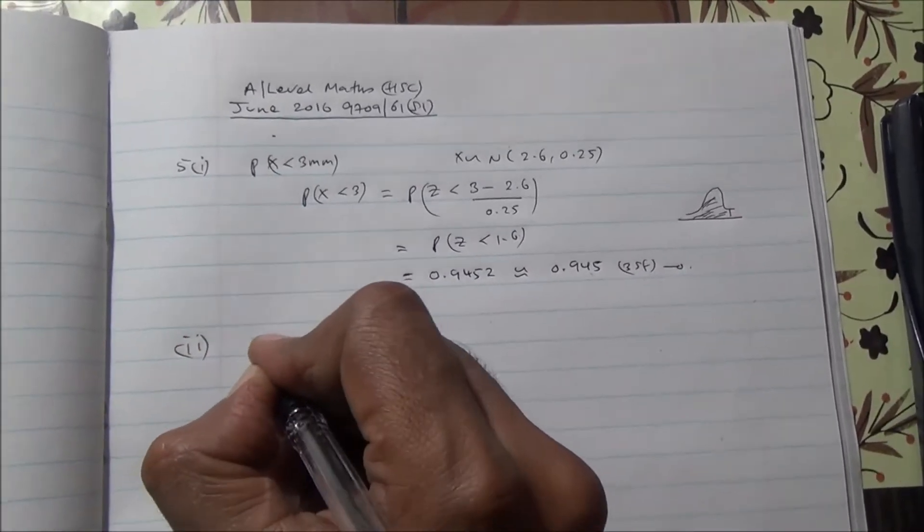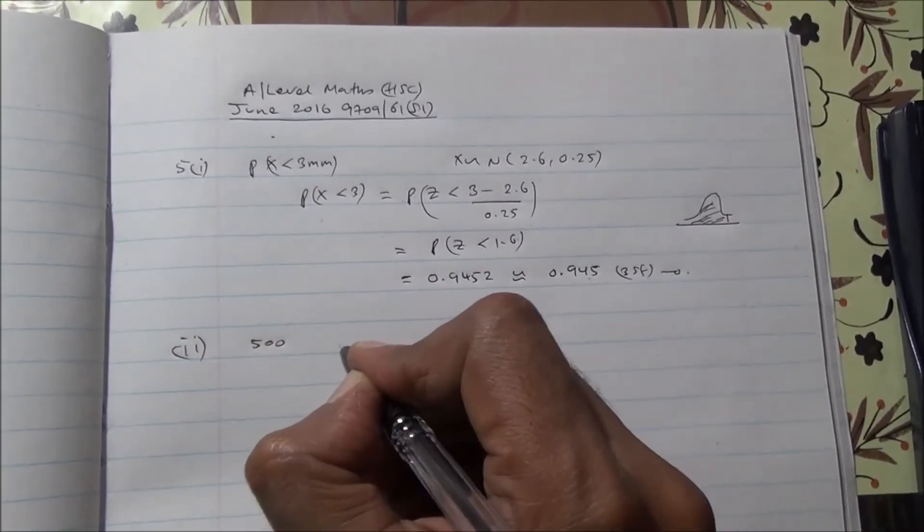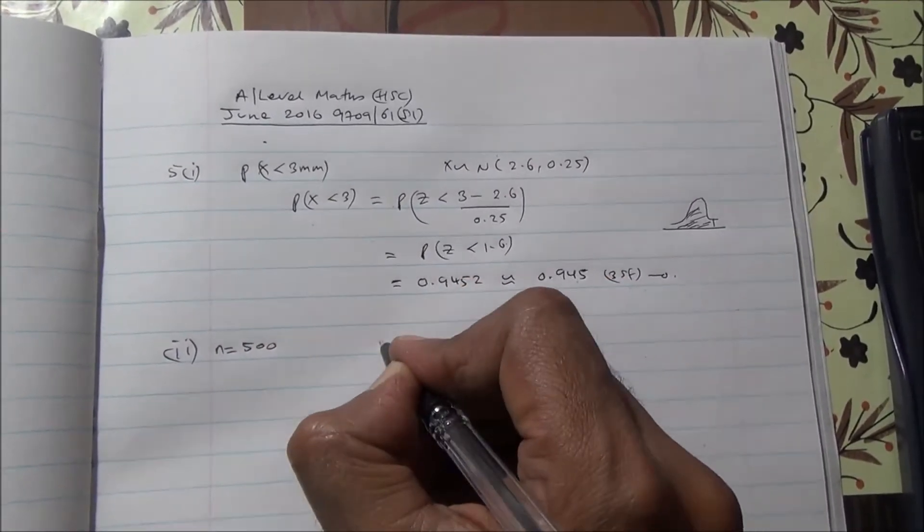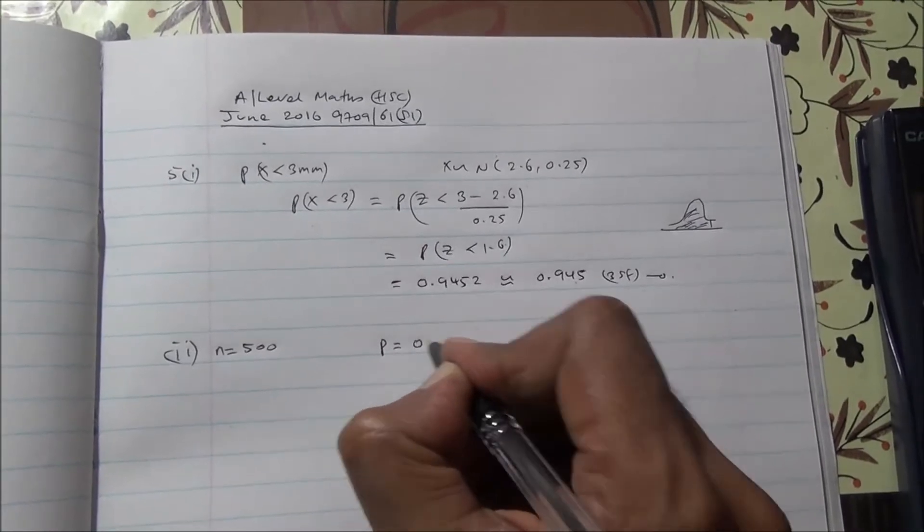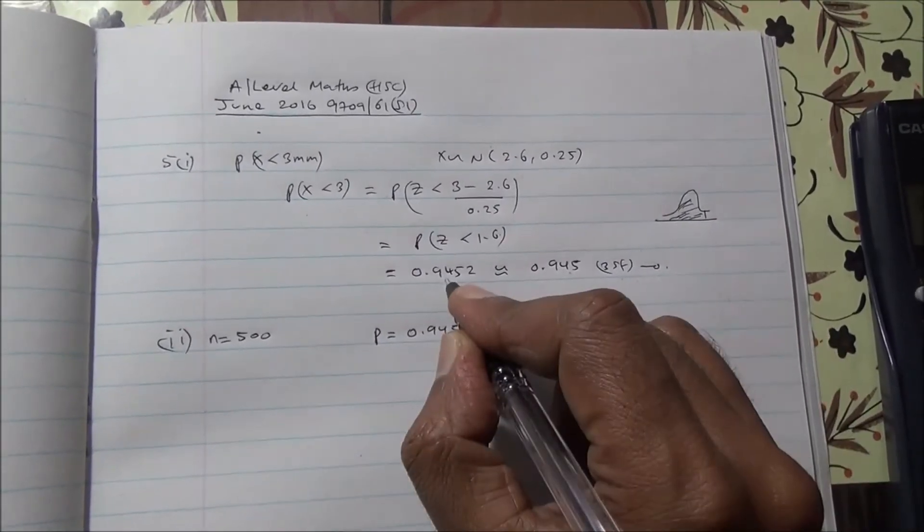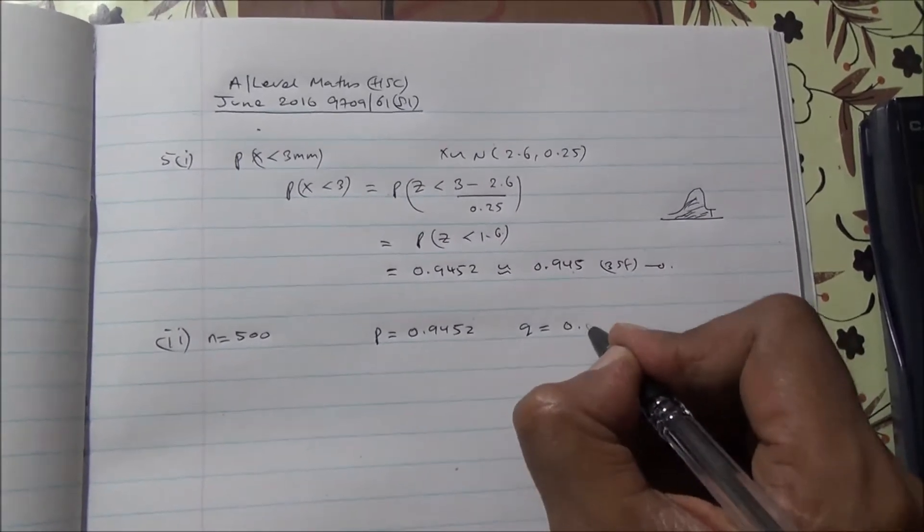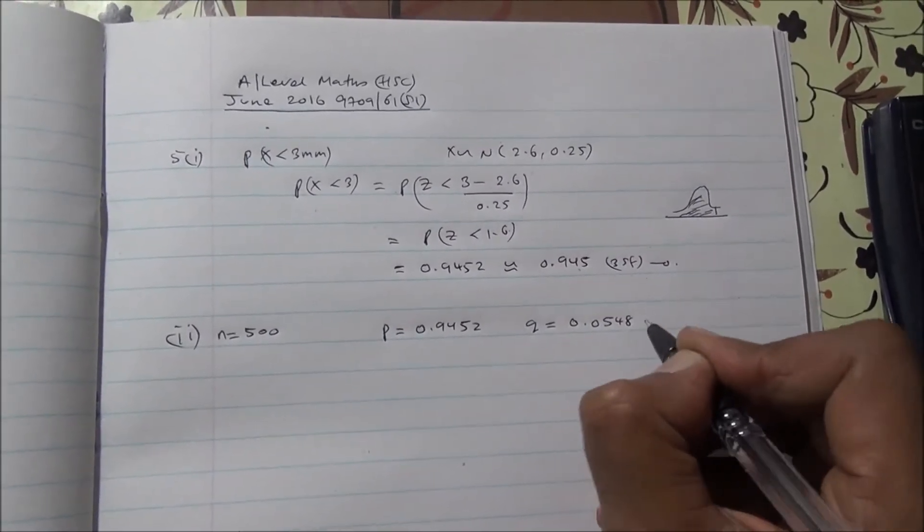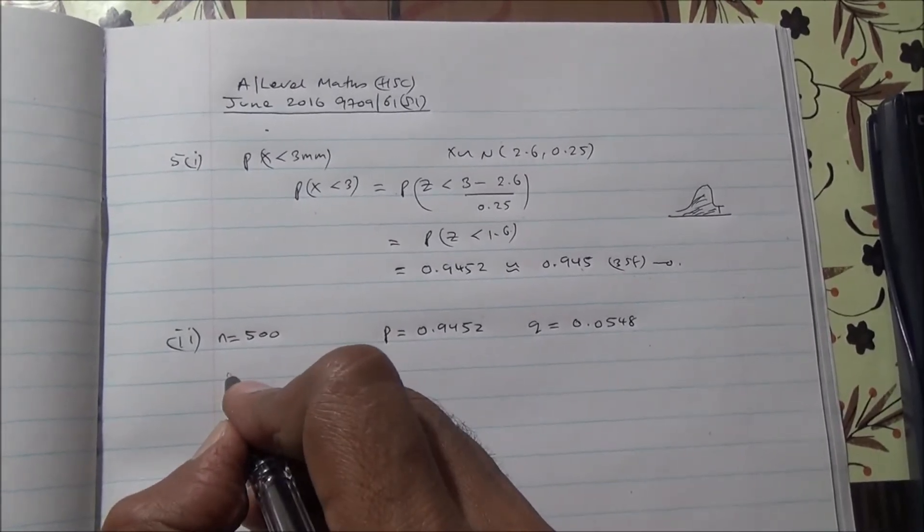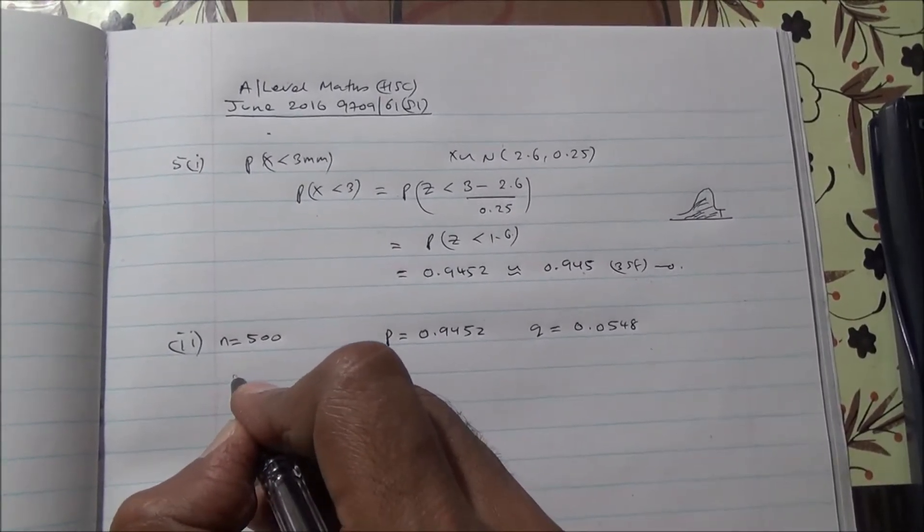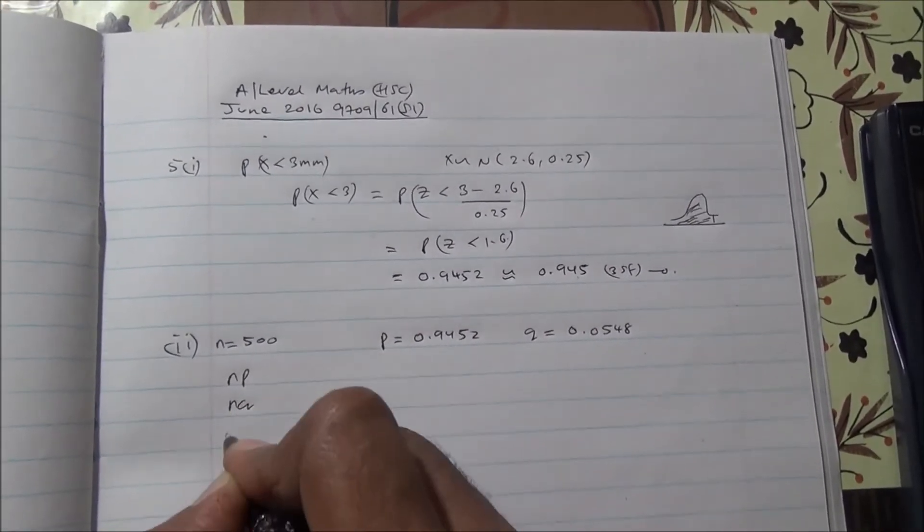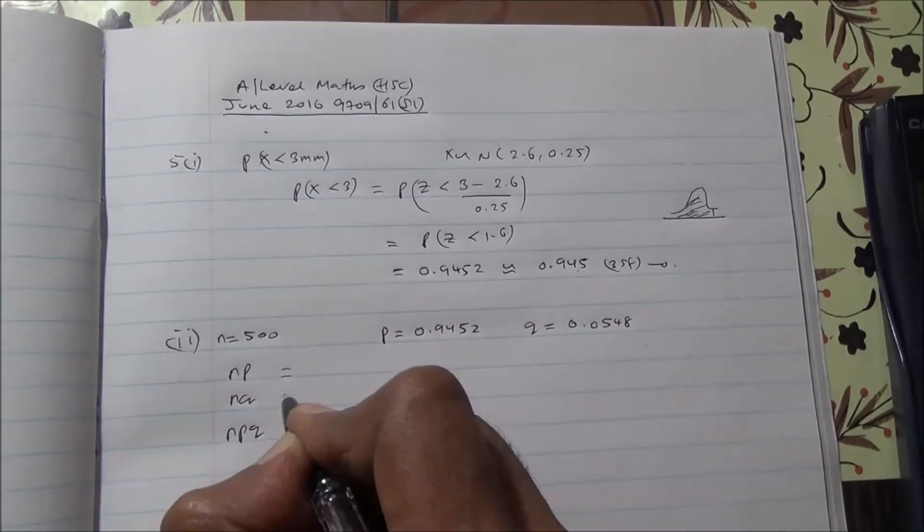Second part, we have 500 such straws and the probability that they fit is our probability of success, 0.9452. Probability of failure is 1 minus that, 0.0548. When we have a binomial distribution approximating to a normal distribution, we're going to calculate NP, NQ, and NPQ.